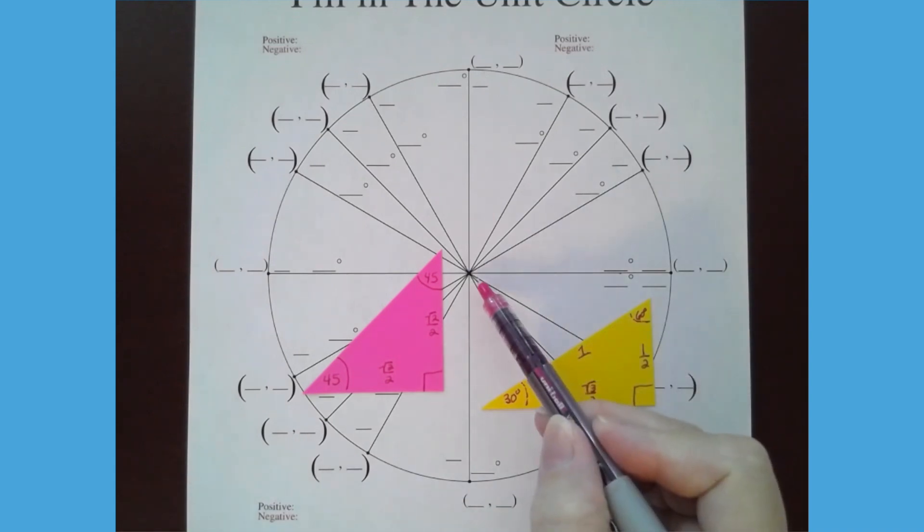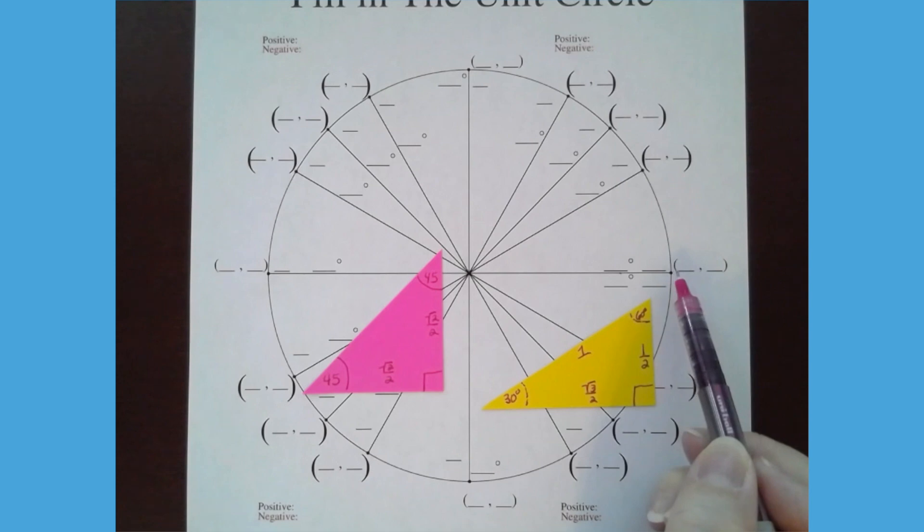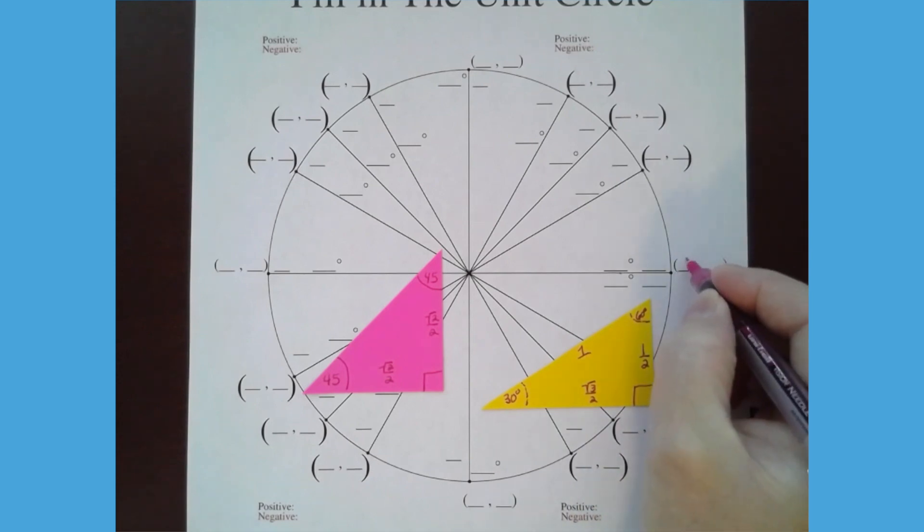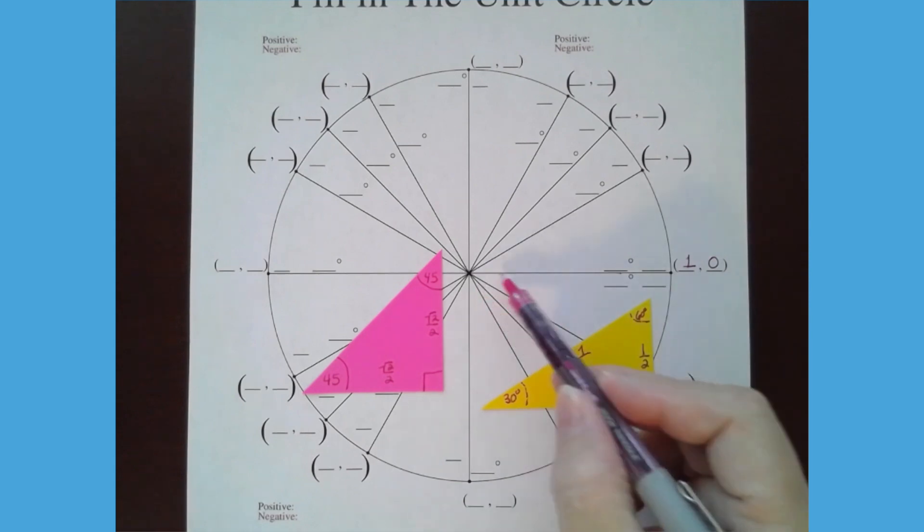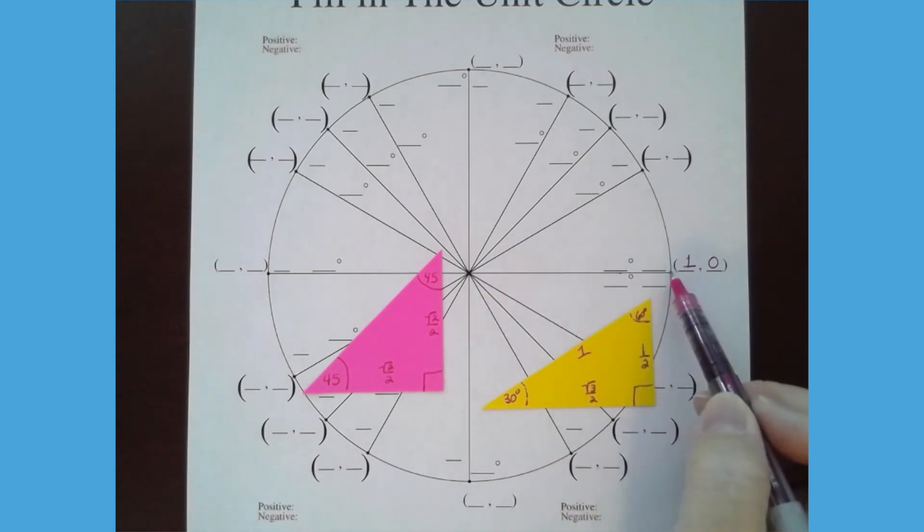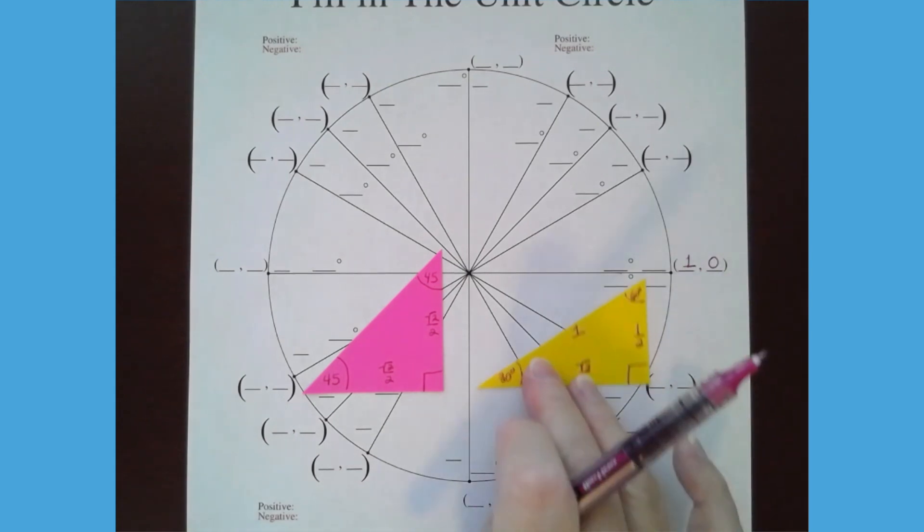We know that the circle has a radius of one. So we know that this point is one, zero. I go over one from the middle and up and down, nothing, right? Over one, up and down, nothing.